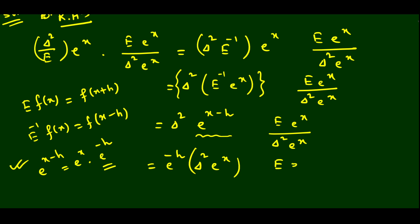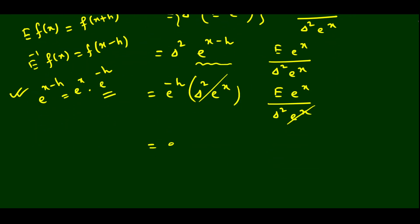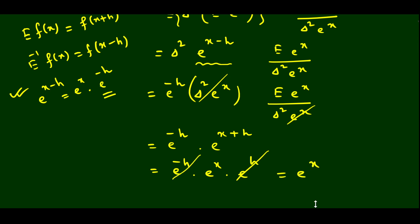The second term is eˣ divided by delta² eˣ. Now the delta² eˣ terms cancel. We are left with e^(−h) · E eˣ. Since E eˣ = e^(x+h), we have e^(−h) · e^(x+h) = eˣ · e^(−h) · eʰ = eˣ. So the answer is eˣ.